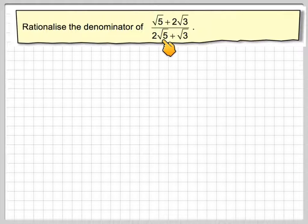Rationalise the denominator of square root of 5 plus 2 root 3 divided by 2 root 5 plus root 3. Okay, write the problem out.